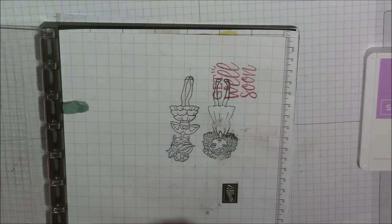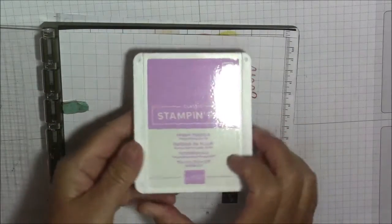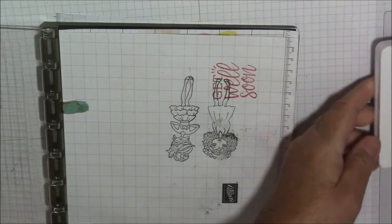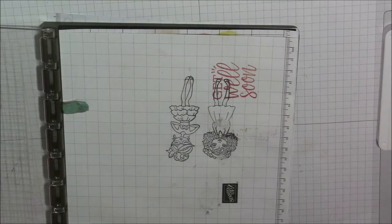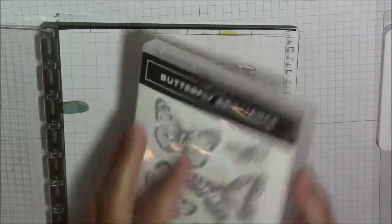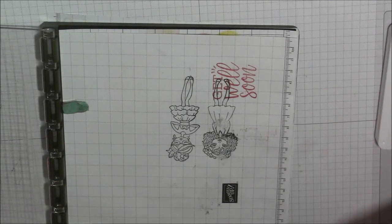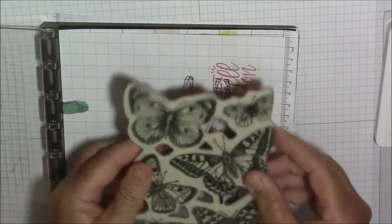We're going to use the Stamparatus and a sneak peek to a new in color, fresh freesia. That's a new 2021 to 2023 in color. I'm going to be using the butterfly brilliance stamp set. This is a background stamp, and you have told me that you have troubles with larger stamps.